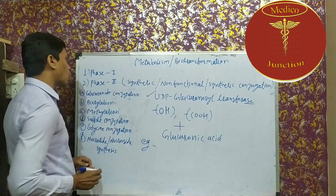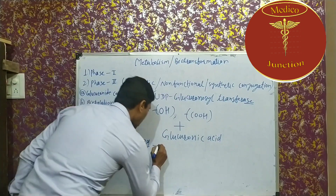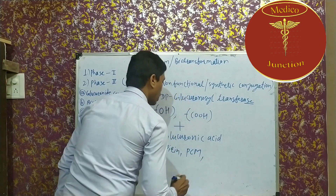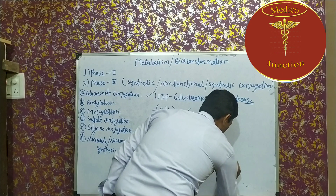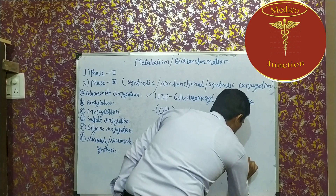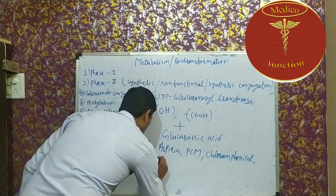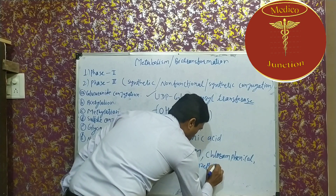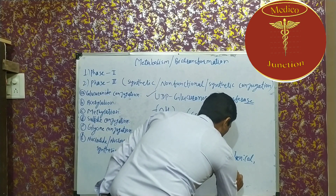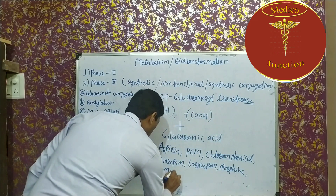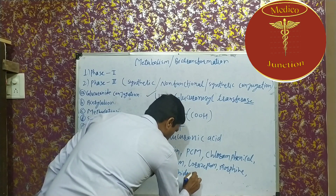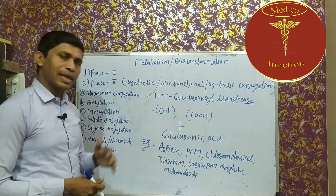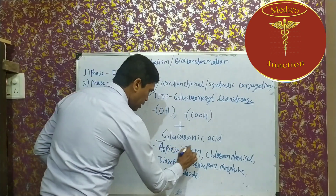Now let's see examples of drugs metabolized by glucuronide conjugation. Examples include aspirin, PCM (paracetamol), chloramphenicol, diazepam, as well as lorazepam, also morphine, and metronidazole. These are the drugs which are metabolized by glucuronide conjugation in Phase 2 reactions and become more water soluble and easily excreted out from the body.